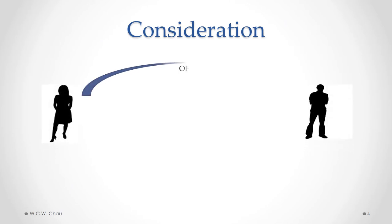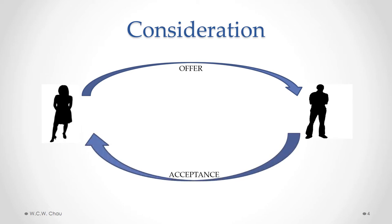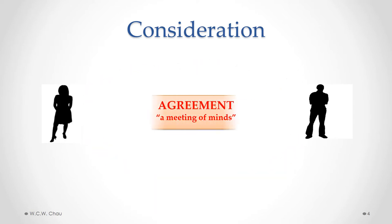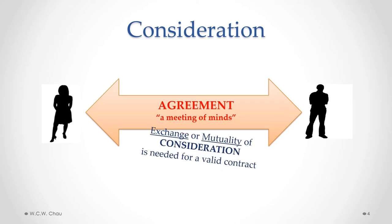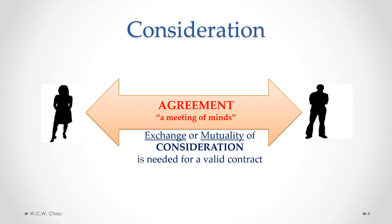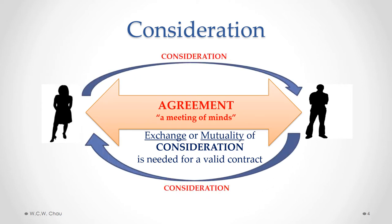We have two parties. One person makes an offer to the other, and that second person accepts the offer — provides an acceptance. What that results in is an agreement, or a meeting of minds. We talked about that in the previous module. What we also need to have a legally binding contract is an exchange, or mutuality of consideration. Consideration has to flow from one party to the other, and vice versa, in order to have a valid contract.